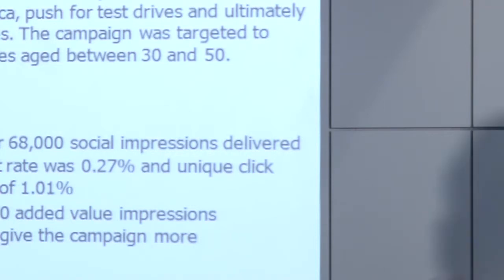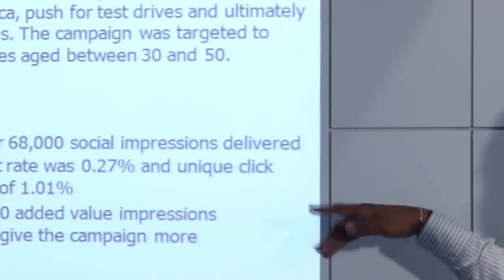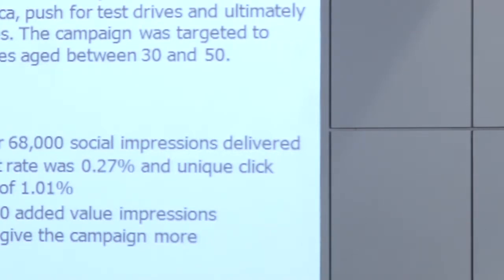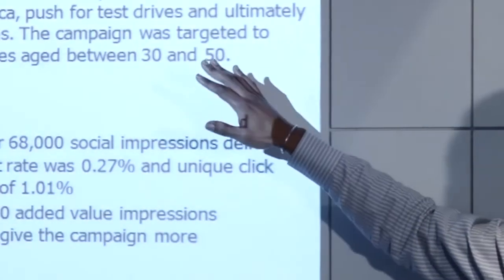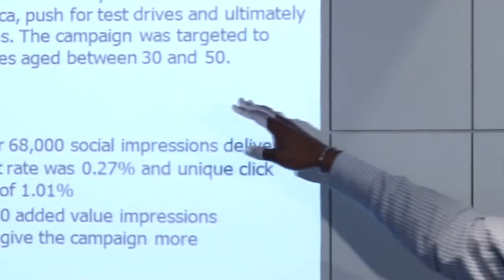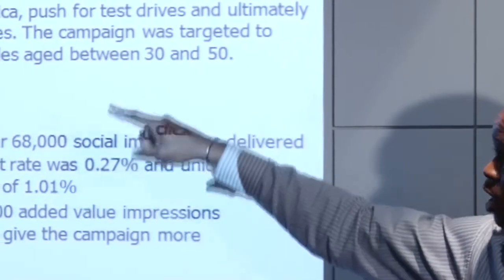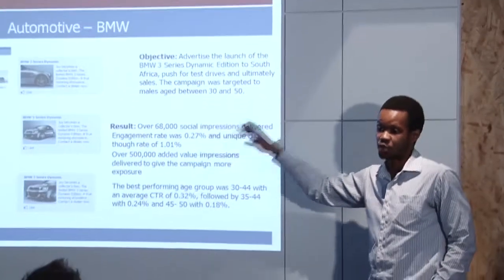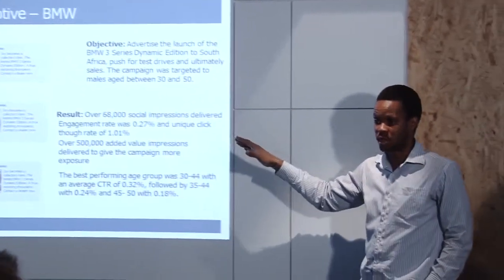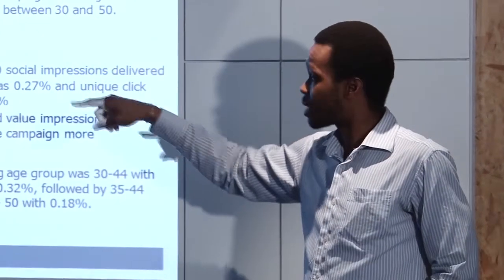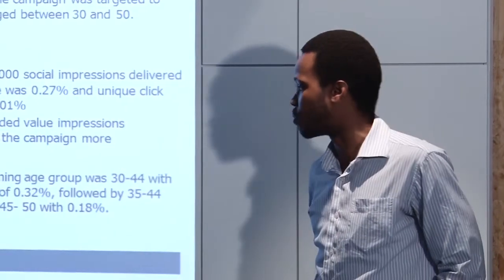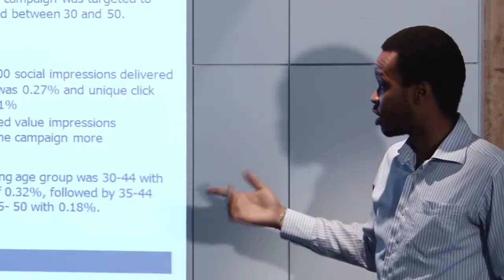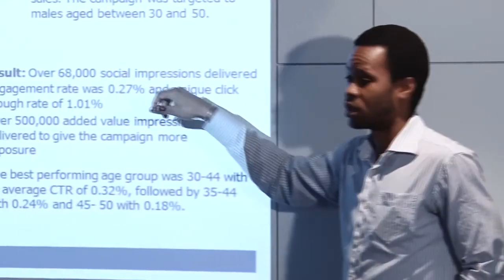This is a campaign that we ran for BMW last year in South Africa. Their objective for their campaign was that they were trying to target males in South Africa between the ages of 30 to 50 years old. They were launching a new limited edition three series in the country. It was unique to South Africa, so it was only going to be launched in South Africa. What they did was they ran a two-week campaign and they launched, they ran four different ads. I just only showed you three of them there.